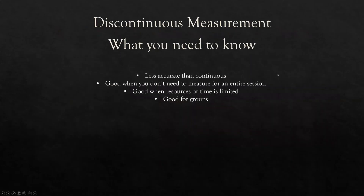Discontinuous measurement — what you need to know: less accurate than continuous; good when you don't need to measure for an entire session; good when resources or time are limited; and good for groups. Partial interval: does the behavior occur at all during the interval? Whole interval: does the behavior occur the entire interval? Momentary time sampling: does the behavior occur at the end of the interval? Play check: does each group member's behavior occur at the end of each interval?